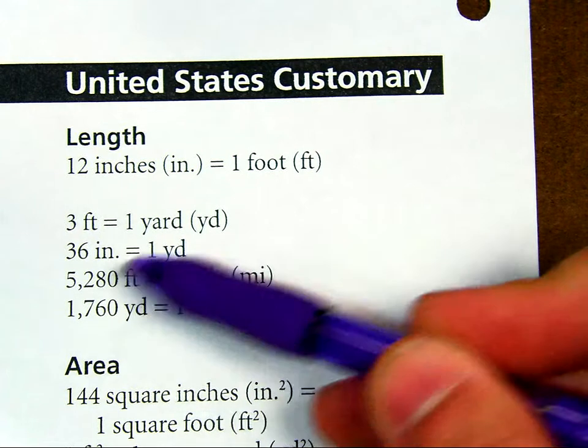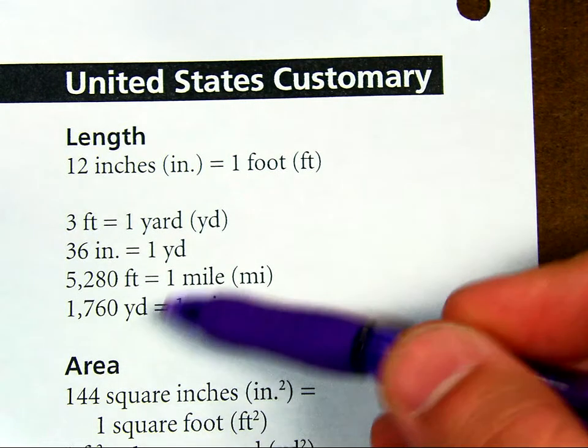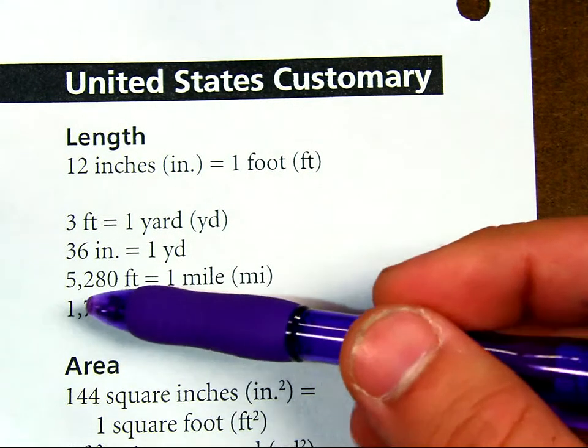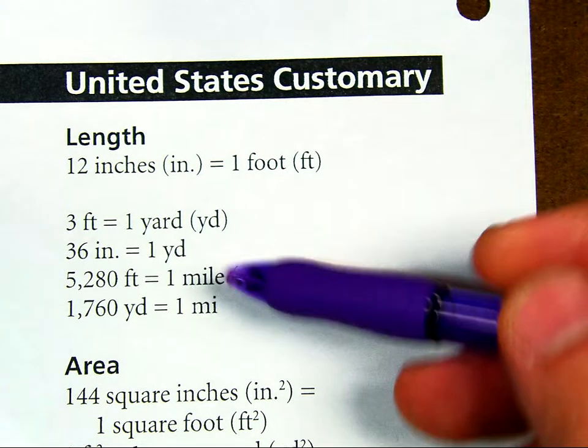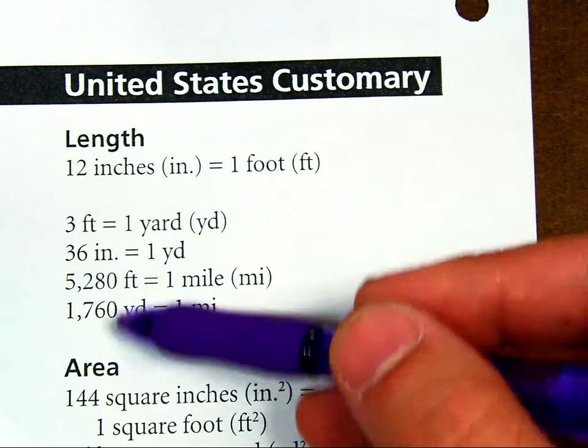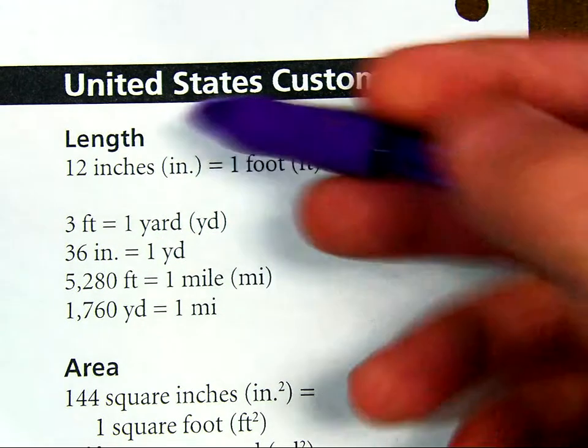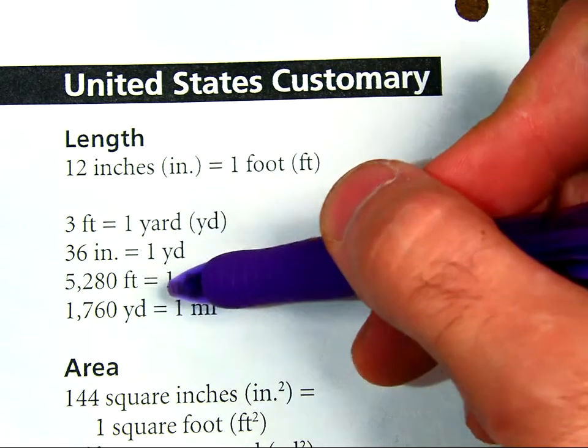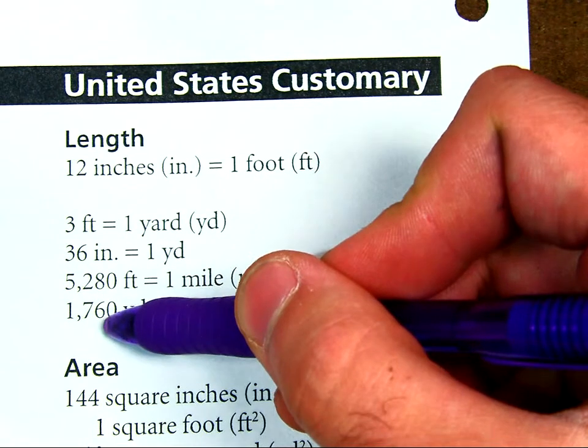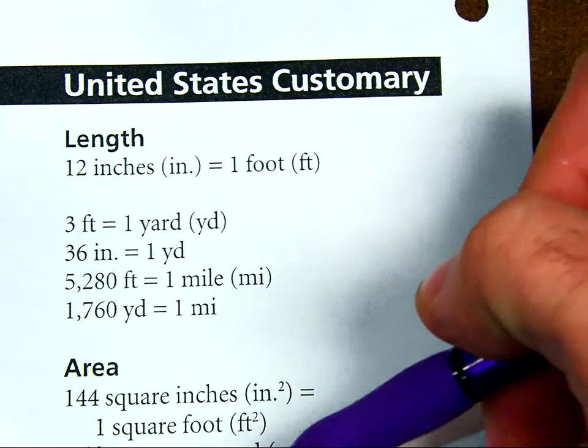This one is less commonly used, but it's kind of good to know. There are 1,760 yards in a mile, and there are 5,280 feet in a mile because there is 3 feet for every yard. 3 times 1,760 will be 5,280.